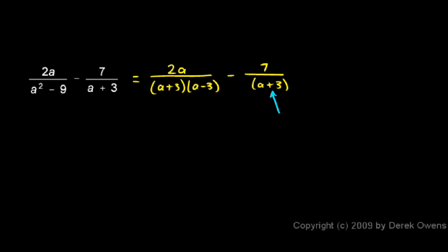If this second fraction had an a minus 3 as well in the denominator then they would have a common denominator. So I can just multiply the second fraction by a minus 3 over a minus 3 like that.